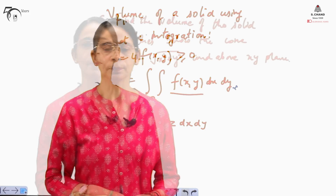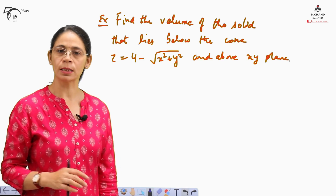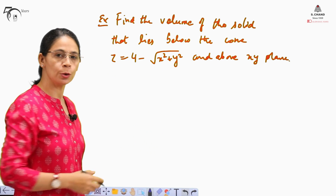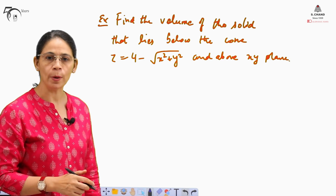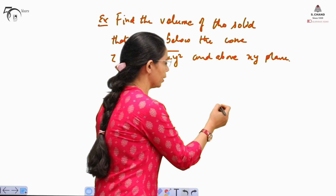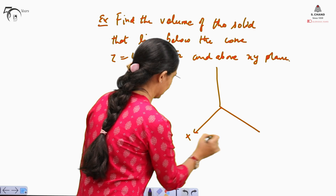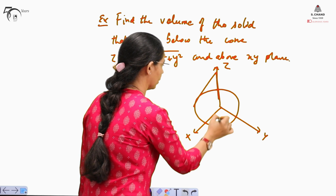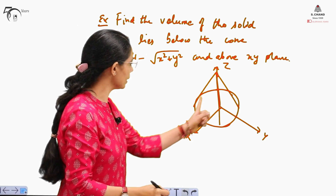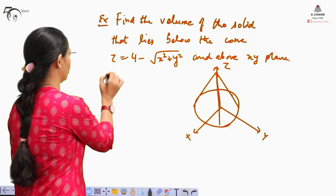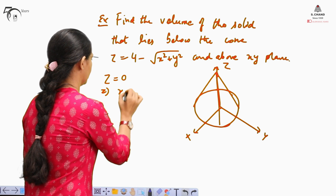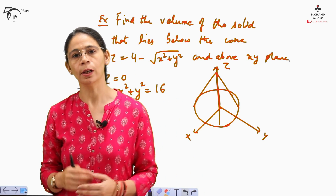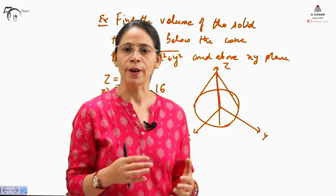We will take one question to make this more clear. The question is: find the volume of the solid that lies below the cone z = 4 − √(x² + y²) and above the xy-plane. For this, we need to draw the region of integration first. Taking x-axis, y-axis, and z-axis, the cone becomes a shape in 3D space. The circle lies in the xy-plane, so we put z = 0, which gives us the circle x² + y² = 16.